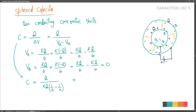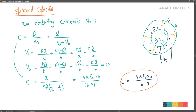Q cancels out. We write K = 1/(4πε₀). The expression simplifies to (1/a - 1/B), which gives (B - a)/(aB). Therefore the capacitance C = 4πε₀ · aB / (B - a). This is the capacitance formula for two concentric spherical shells.